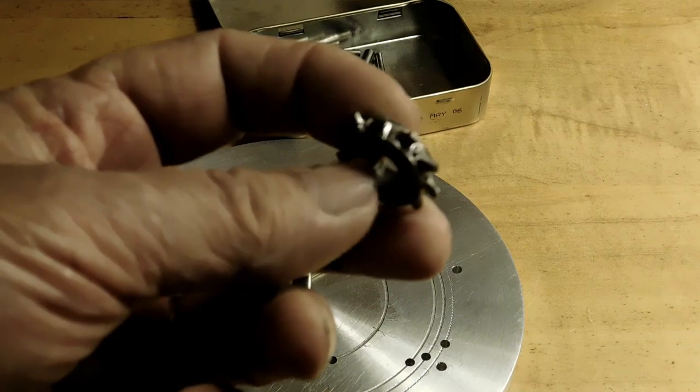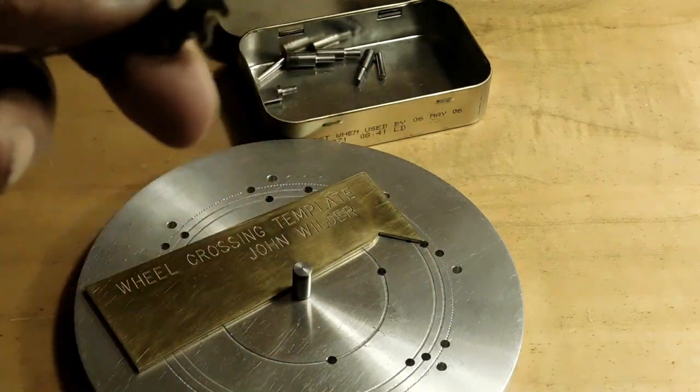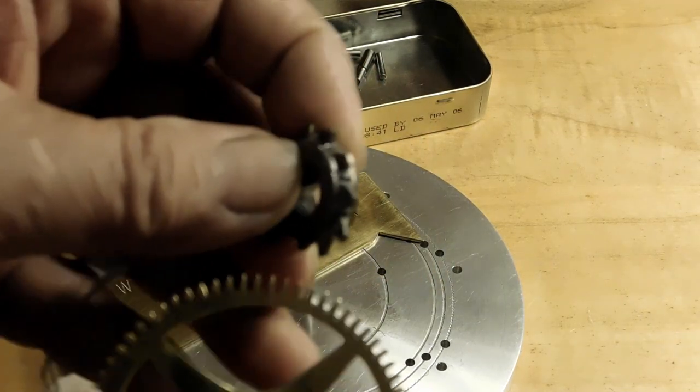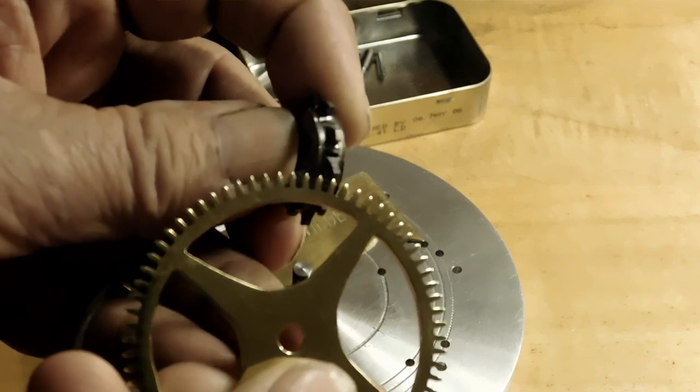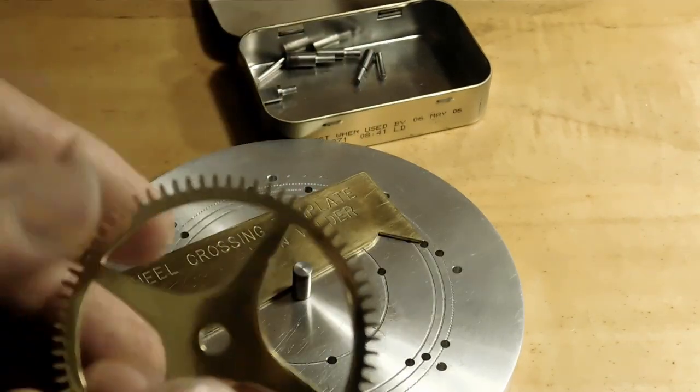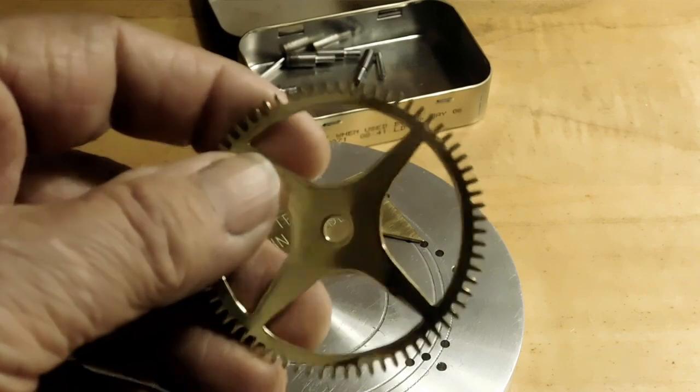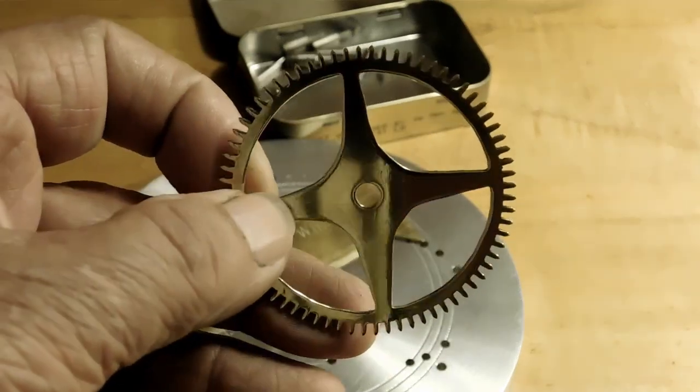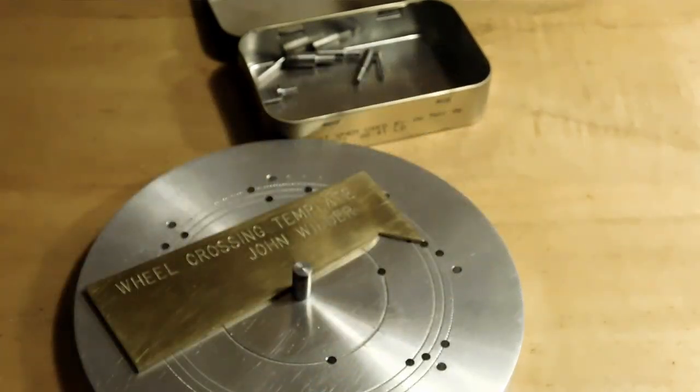This is the gear cutter that I made in the first video, and then in the second video I used it to cut the teeth on this wheel. In this video I'm going to cross out the wheel or make the spokes. There's about a million different ways to spoke a wheel, this is just how I did it.